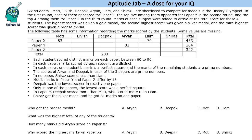Hello everyone, welcome to Aptitude Jab. This problem states that there are 6 students shortlisted to compete for medals in a History Olympiad. They appeared in paper X, and out of them the top 5 appeared in paper Y — one gets eliminated — and then in the third round, 4 of them appear in paper Z.